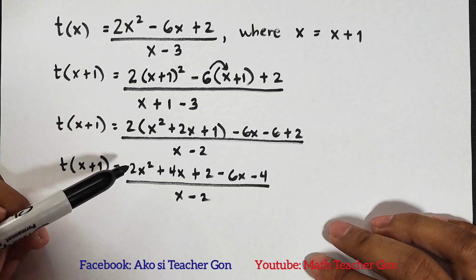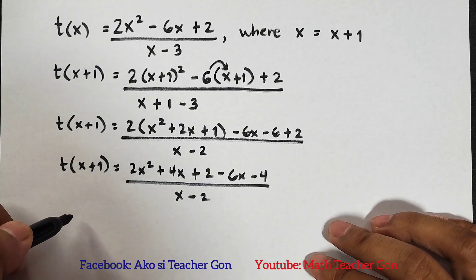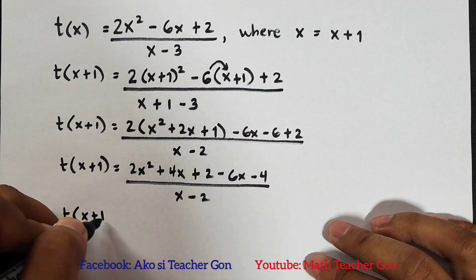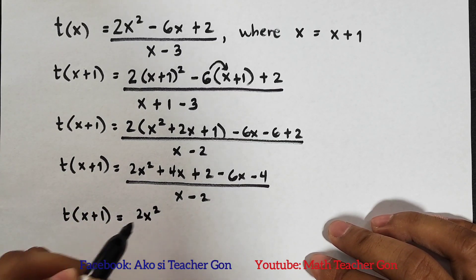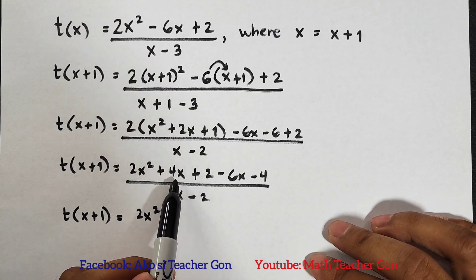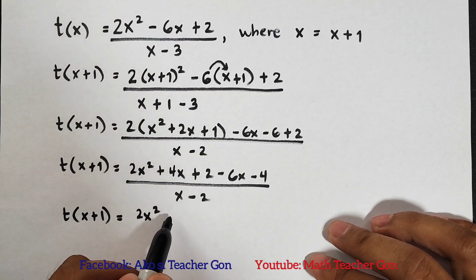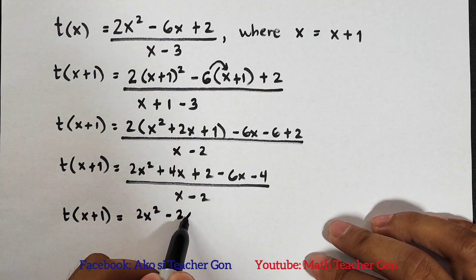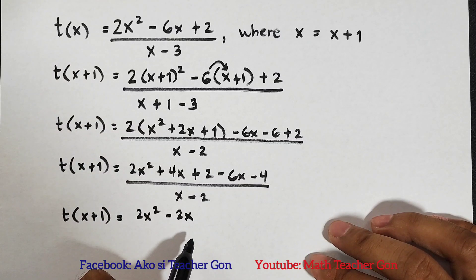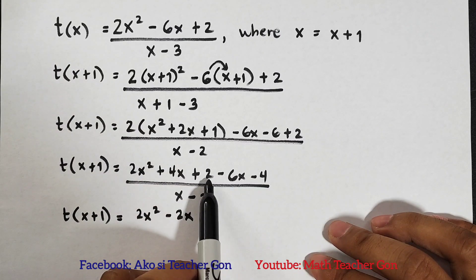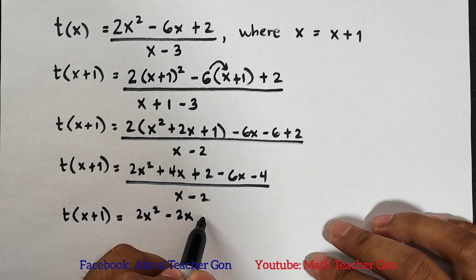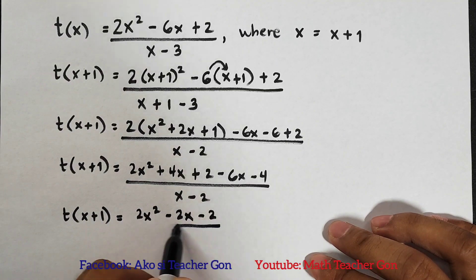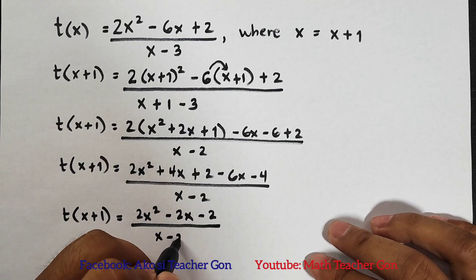In our numerator, we can combine like terms. We will copy 2x squared, and this is 4x, then negative 6x, that would be negative 2x. Then our 2, then negative 4: 2 minus 4 is negative 2, over x minus 2.